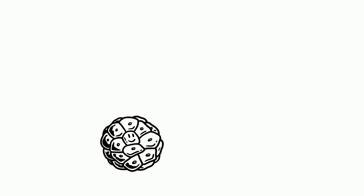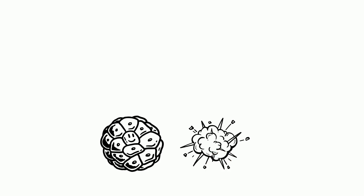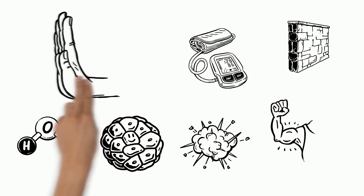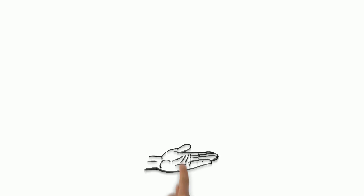In animal cells, if the solution the cell is in has a high water concentration, or is dilute, the cell will explode. This is also called lysing. In plant cells, due to the strength of the cell wall, this water entering creates turgor pressure and swells the vacuole against the wall, making the cell turgid. This gives stem cells their strength.